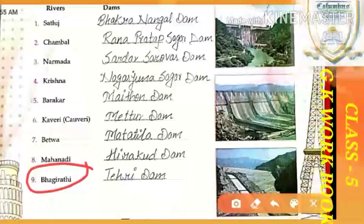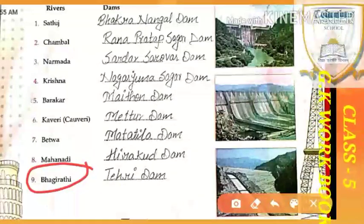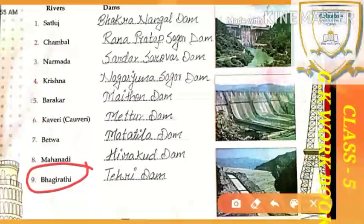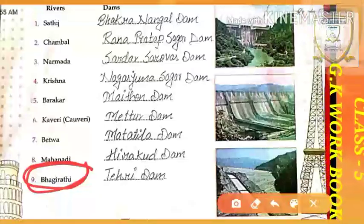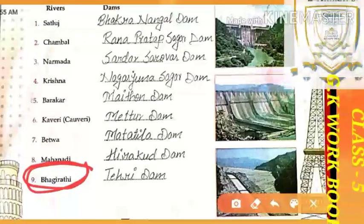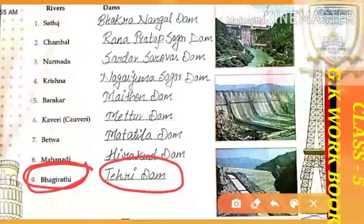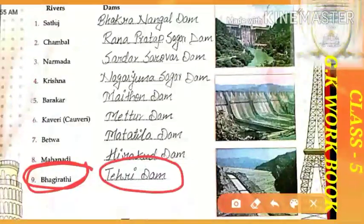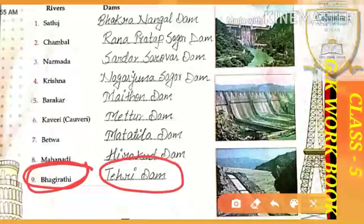And the last one: Bhagirathi river. What is the last one? Bhagirathi. Okay? Bhagirathi river — and the dam of this river is called Tehri Dam. What will you call this dam? Tehri Dam.